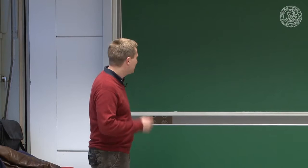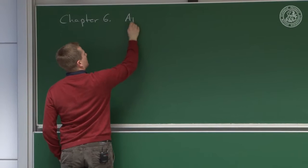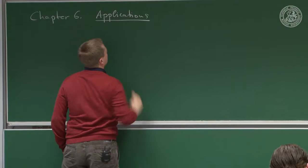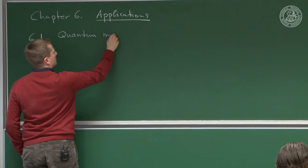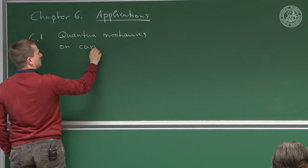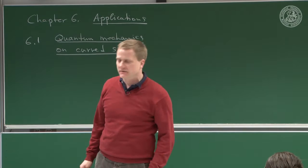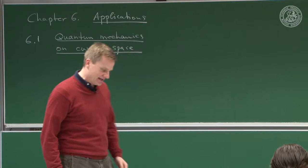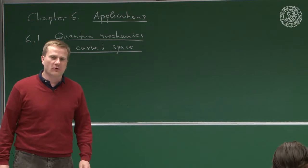Good morning, welcome back. Having finished the formal part of the course, we'll have a rather informal chapter six: Applications. The first application we're going to look at is quantum mechanics on curved space. In this section and the next few, I'd like to change the character of the course a little bit — from telling the existing structure to discovering together how formulae, expressions, methods, and folklore in physics that you all know actually reflect the structures we found.